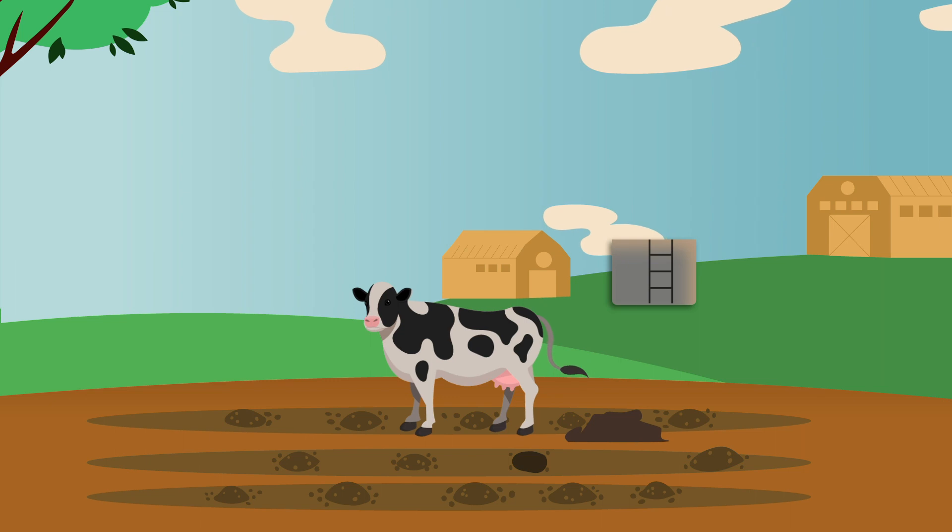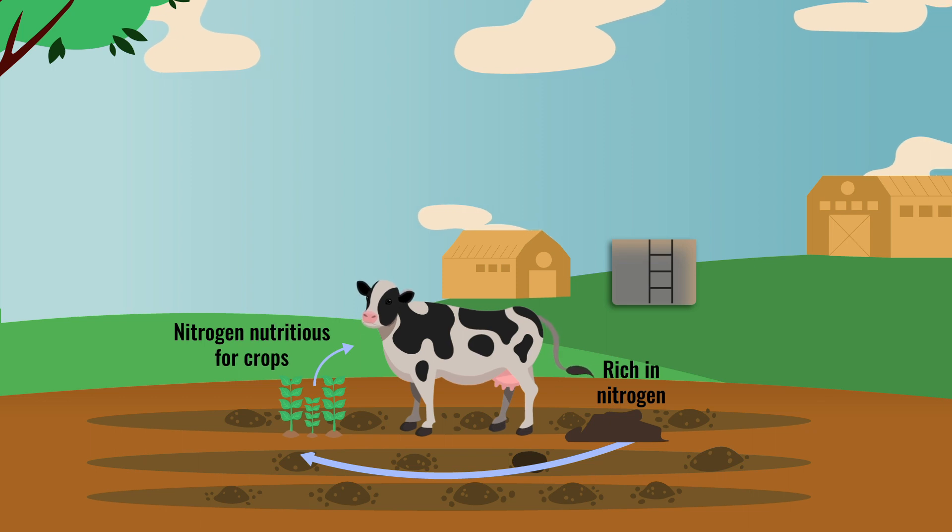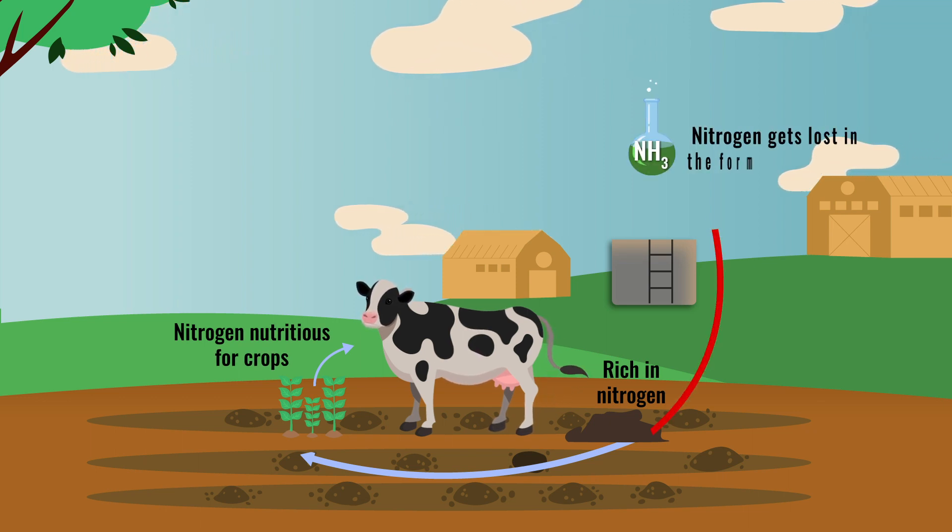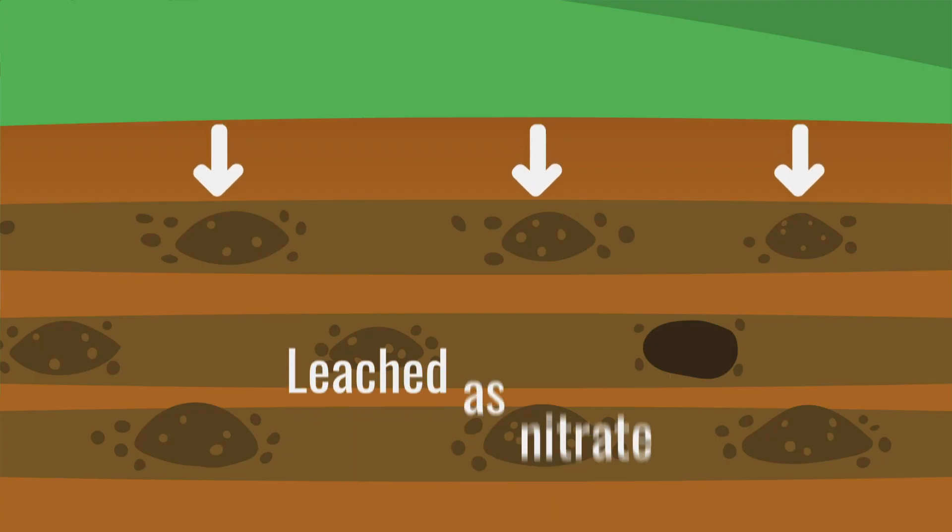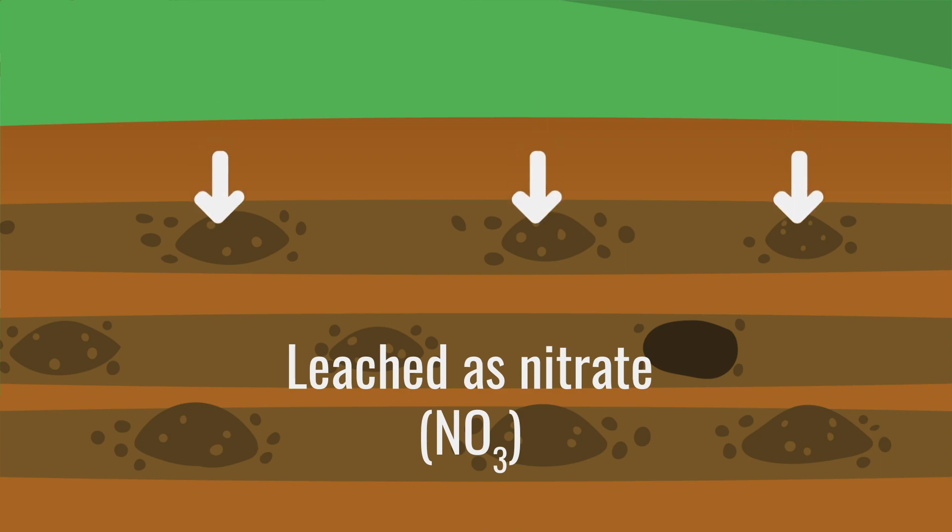That's because today much of the nitrogen in slurry that would otherwise be nutritious for crops is emitted into the atmosphere when it's applied to the fields. Nitrogen gets lost in the form of ammonia when it evaporates into the air and can also be displaced or leached as nitrate.